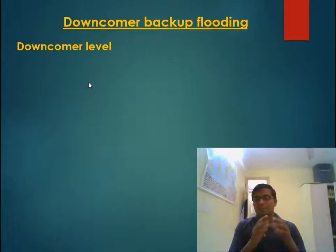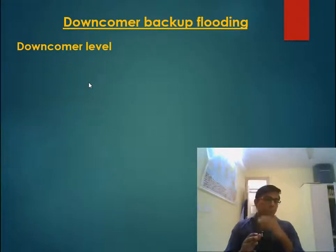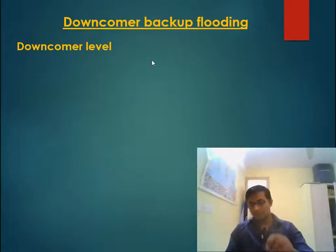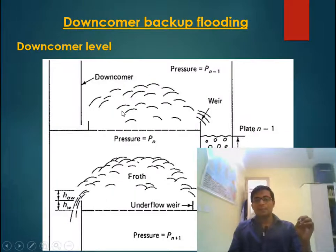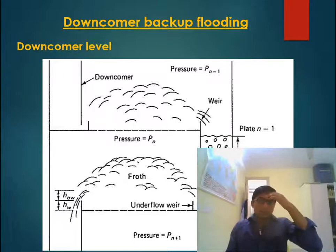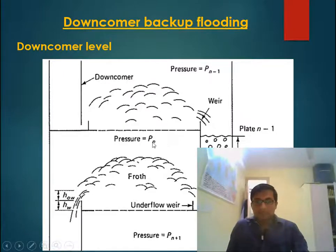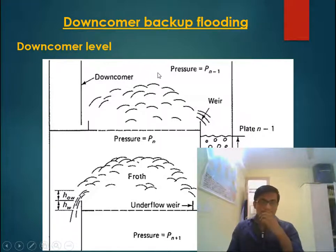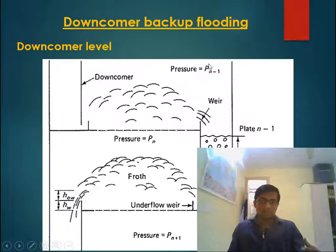Before we start the topic of downcomer backup flooding, let us figure out the liquid level inside the downcomer in a distillation or tray column. In a typical schematic diagram of a tray column, the pressure of vapor below the tray is Pn and the pressure of vapor above the tray is Pn minus 1. Whenever vapor passes through a tray, pressure reduces, so Pn minus 1 is less than Pn.